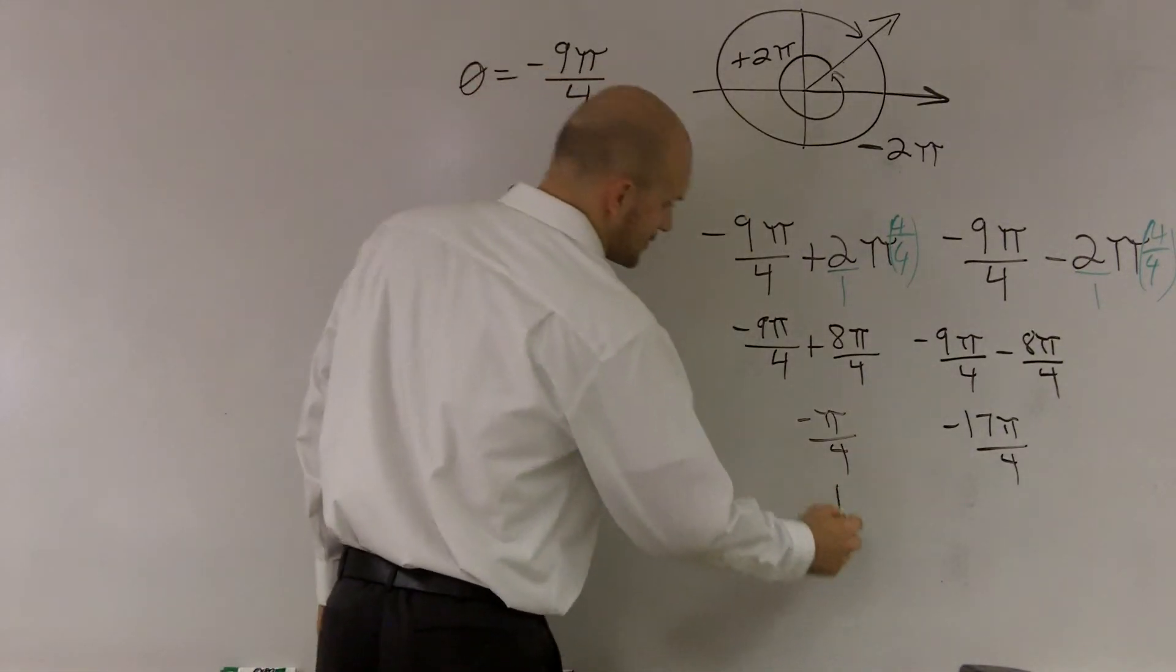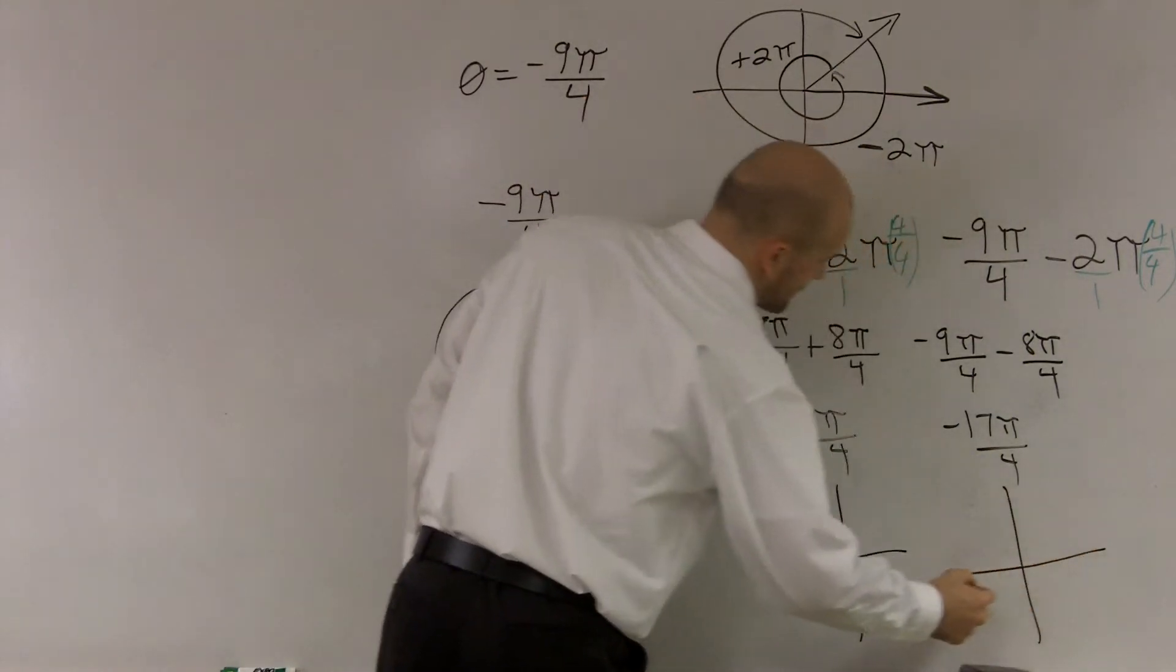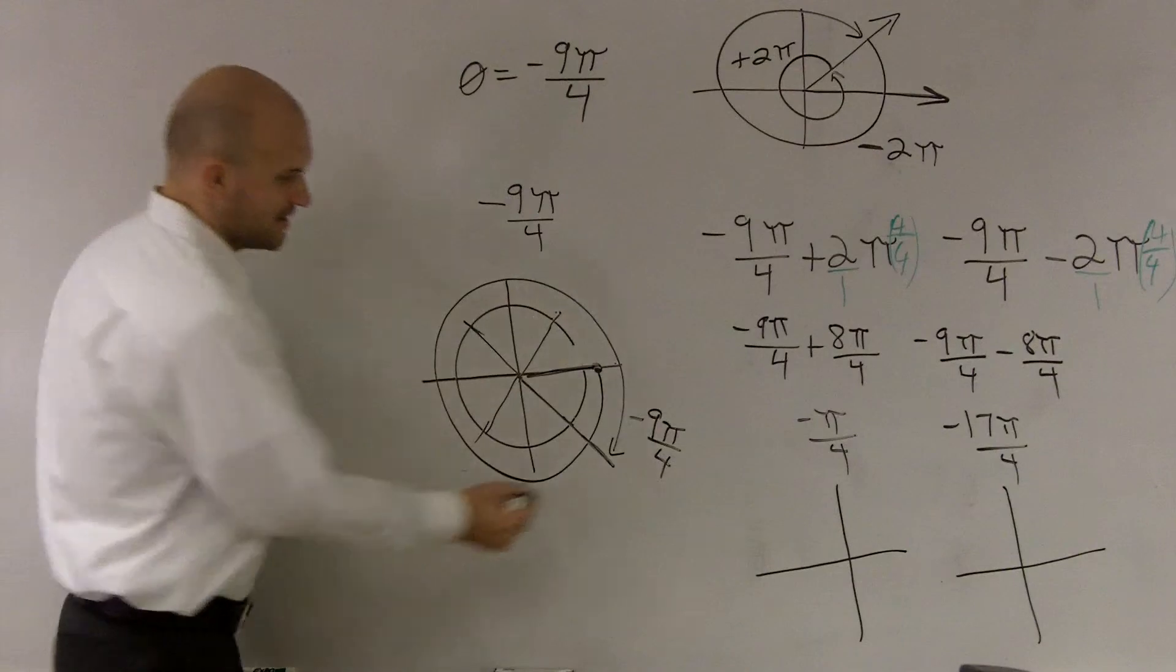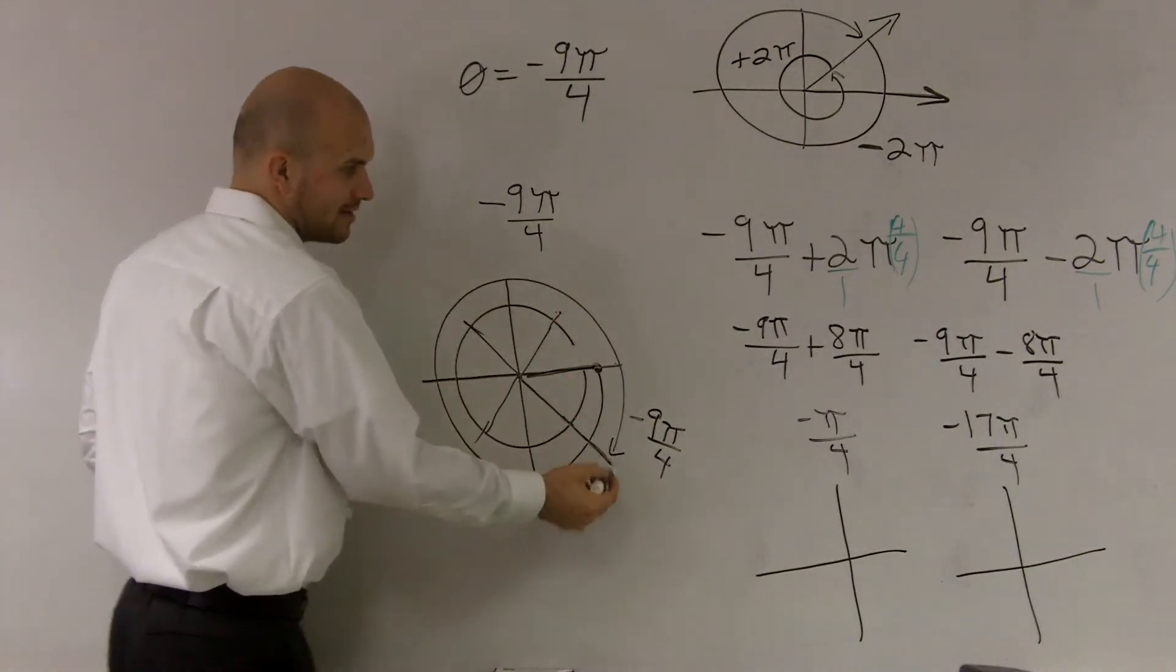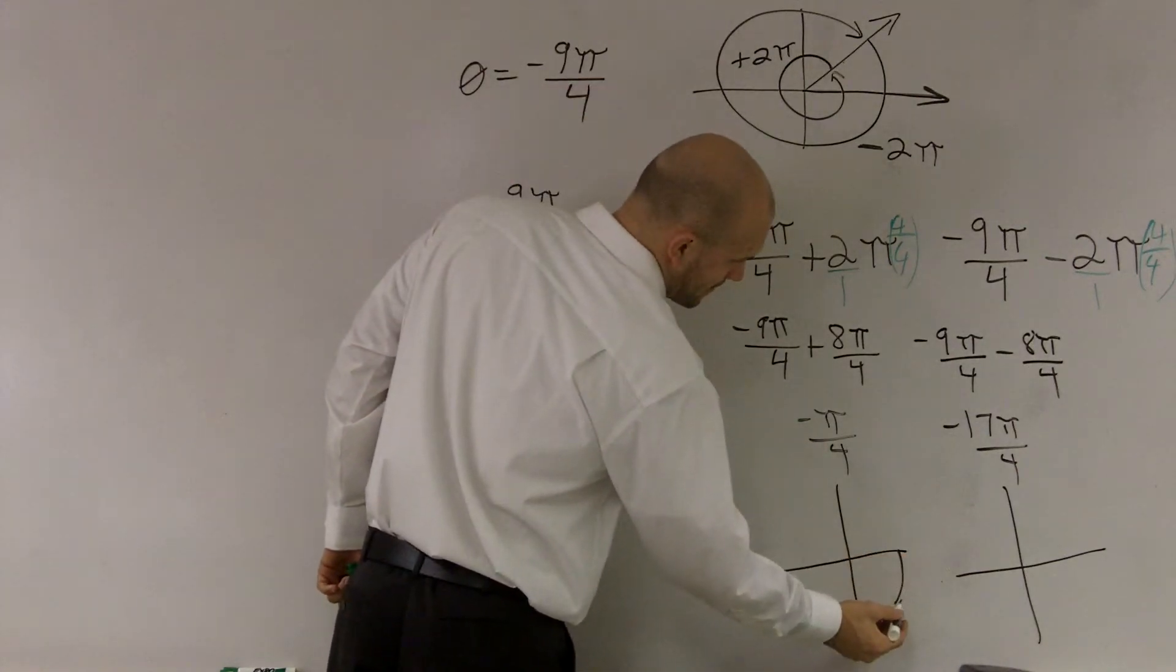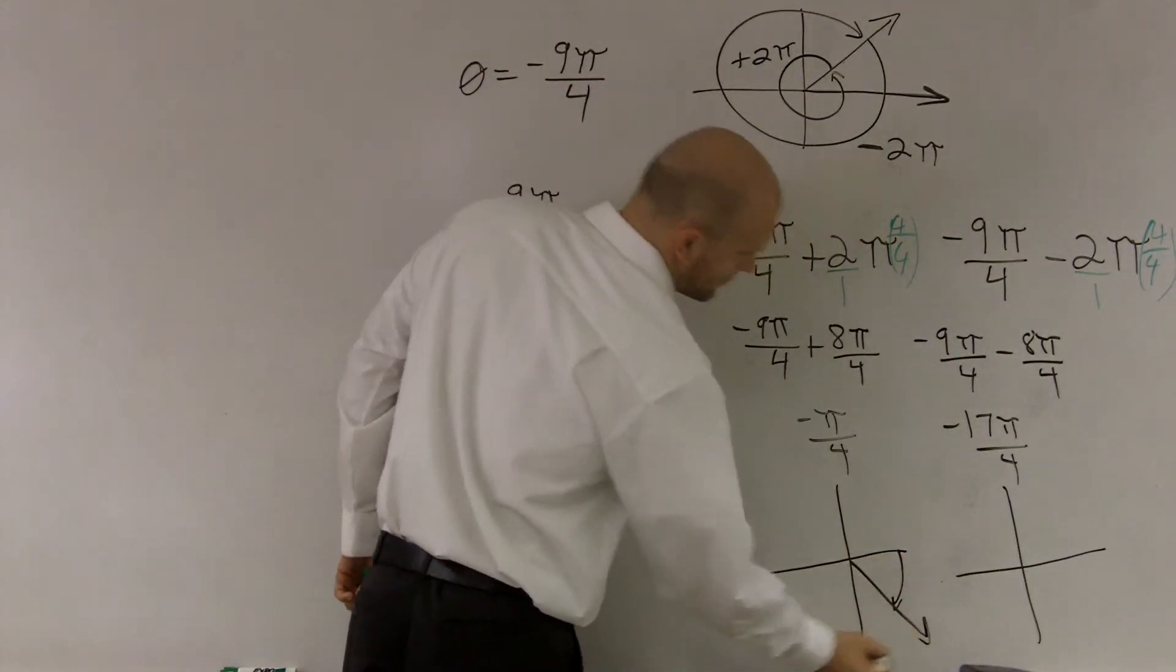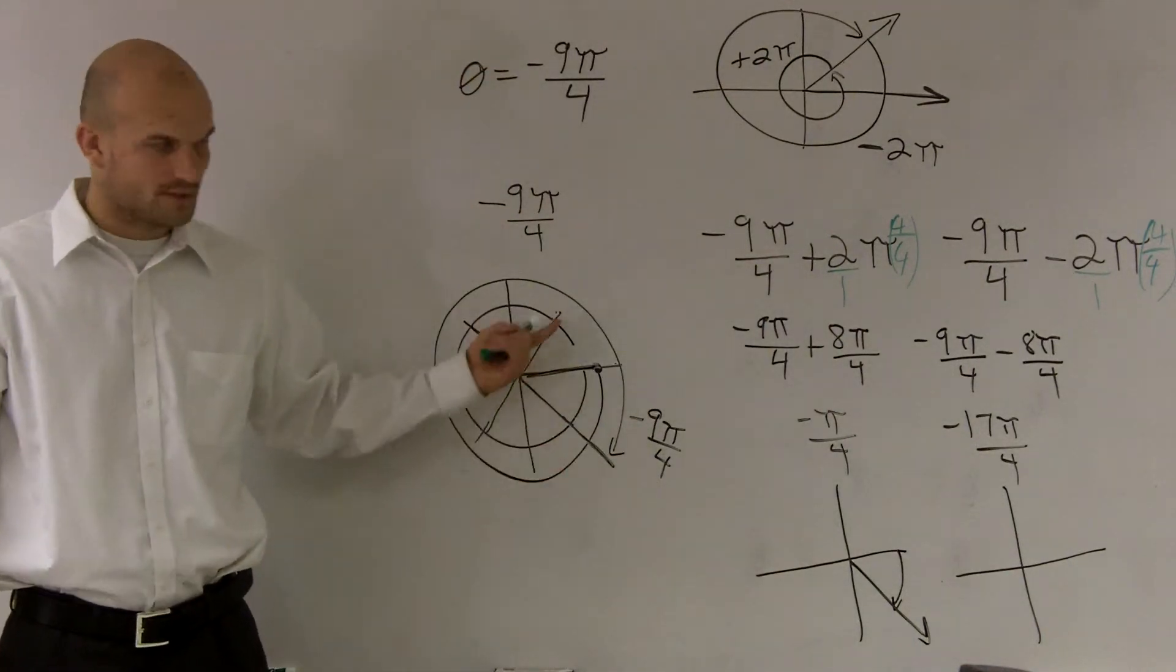So let's go ahead and take a look at what these graphs would look like. Please remember where this one is. This angle goes all the way around and then ends here. Well, what's negative 1 fourth? Right there. That's just right there. Is that the same as that one? Same initial, same terminal? Yes.